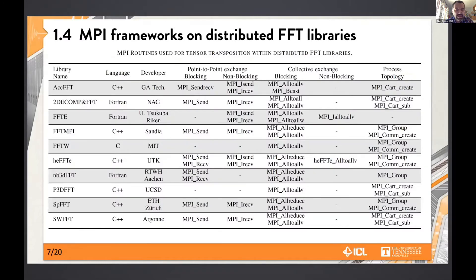This slide shows what MPI functionalities these libraries use. The computation can be organized with point-to-point data exchanges — blocking or non-blocking — or with collective communications, also blocking or non-blocking. Many are done on sub-communicators, resulting in MPI_Alltoallv-type routines. These are the ones most important for us to achieve high performance and reach a high percentage of the theoretical bandwidth peak.